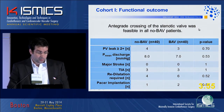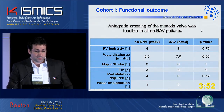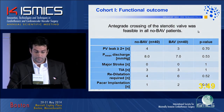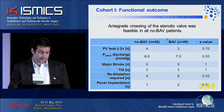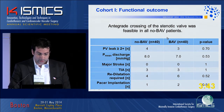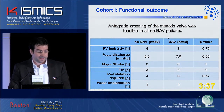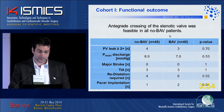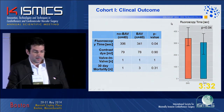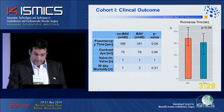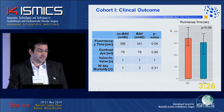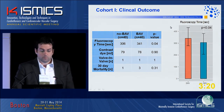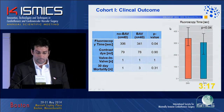Looking at functional outcomes: antegrade crossing of the stenotic valve was feasible in all no-BAV patients. We did not observe any significant difference in rate of paravalvular leakage, in mean gradients at discharge, in rate of major strokes or TIAs, or in necessity for re-dilatation or pacemaker implantation. For clinical outcomes, we did not observe any difference in amount of contrast dye used, necessity for valve-in-valve implantation, or 30-day mortality. However, we did observe a significant reduction of approximately 10% in fluoroscopy time, which is plotted on the right-hand side.